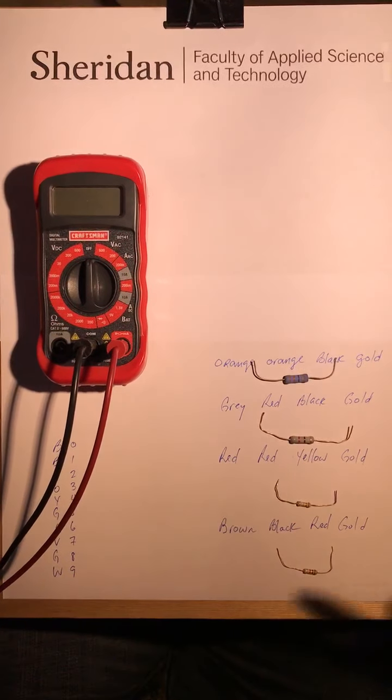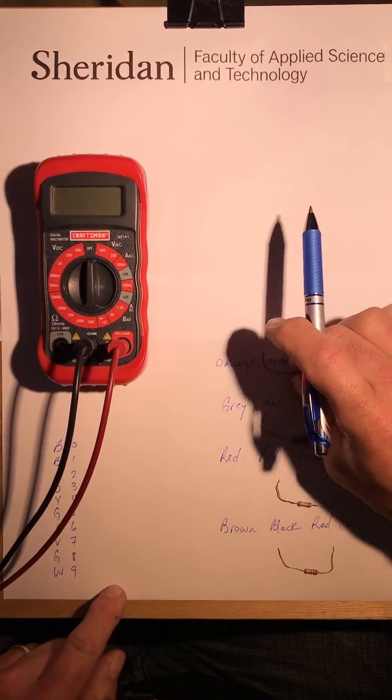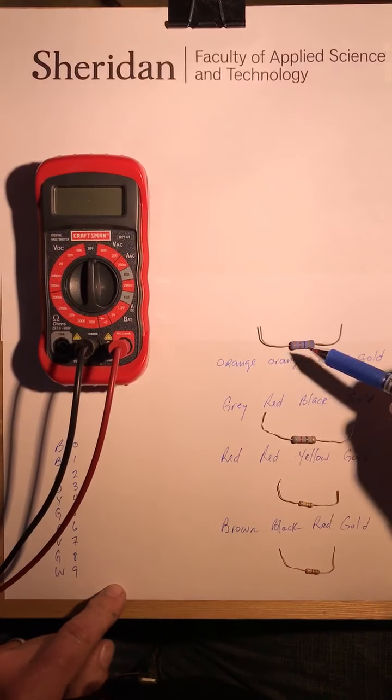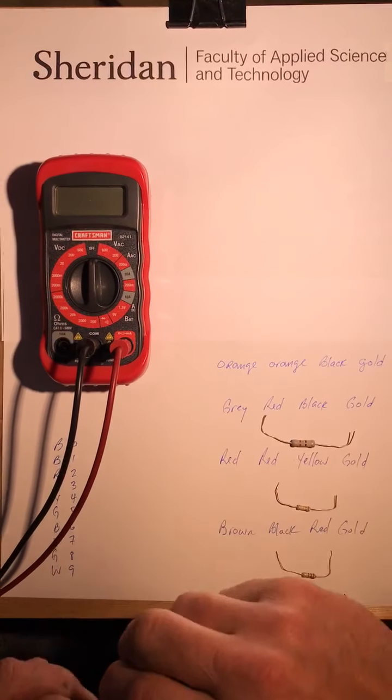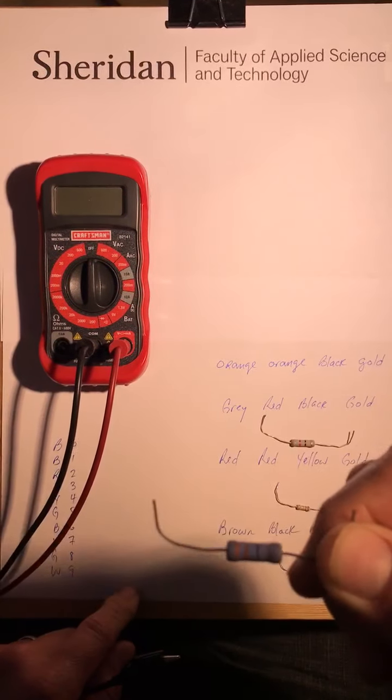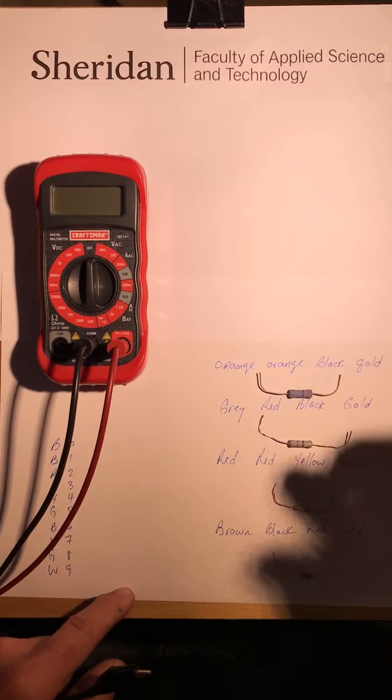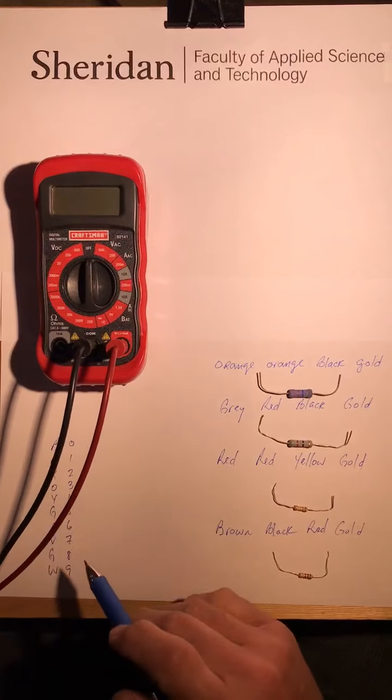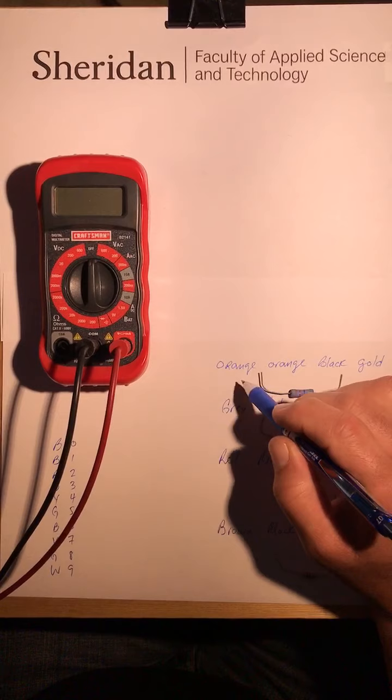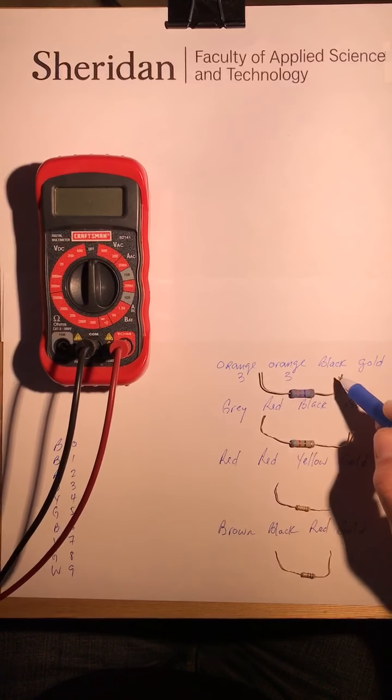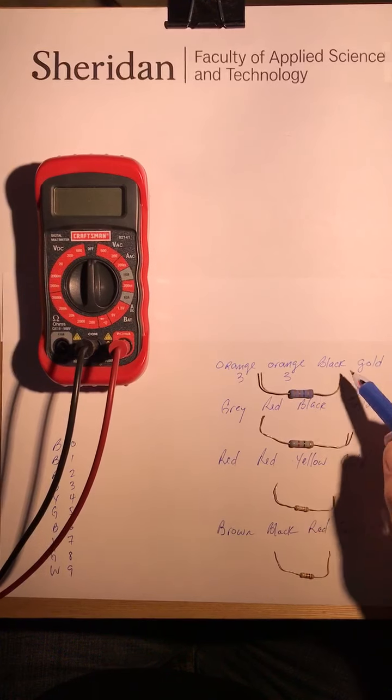The first thing I want to do is take a look at the colors of these resistors. The first one here is orange, orange, black, gold. I know this one kind of looks like it's brown, but it is actually orange. If I take a look at my color coding, orange is three, and black is the multiplier - black means you multiply it by one. So thirty-three, five percent.